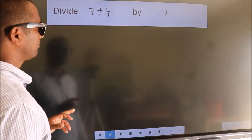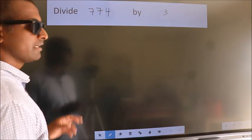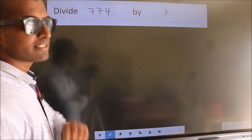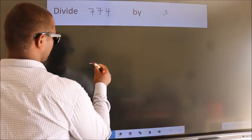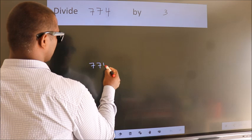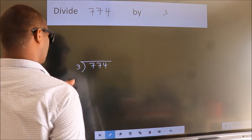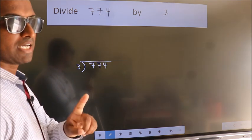Divide 774 by 3. To do this division, we should frame it in this way. 774 here, 3 here. This is your step 1.